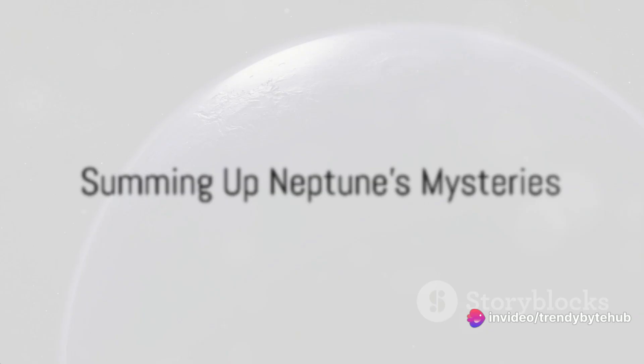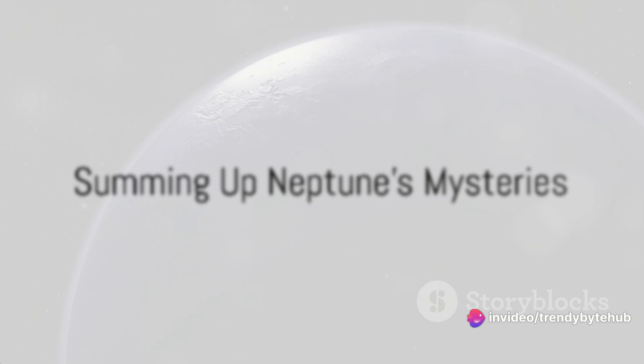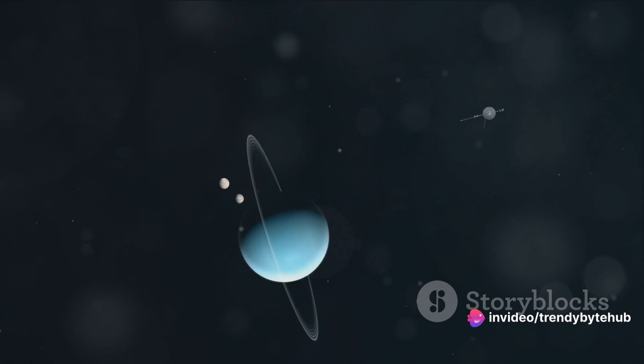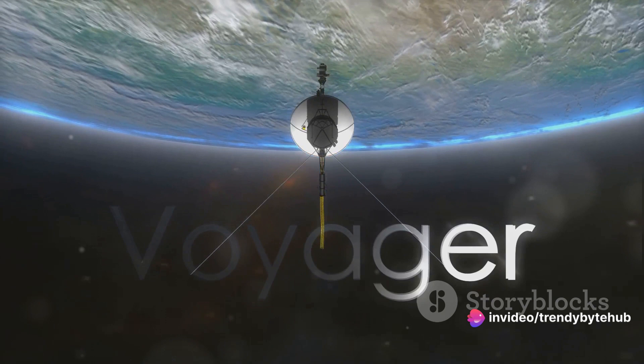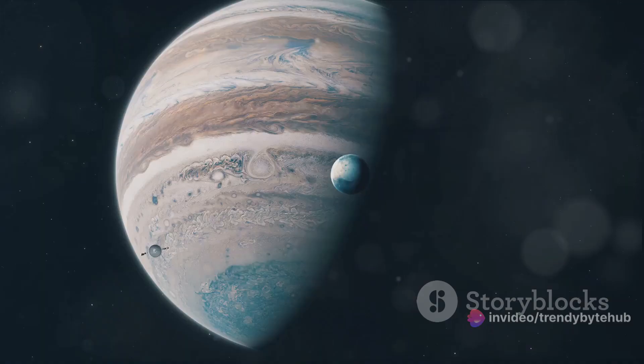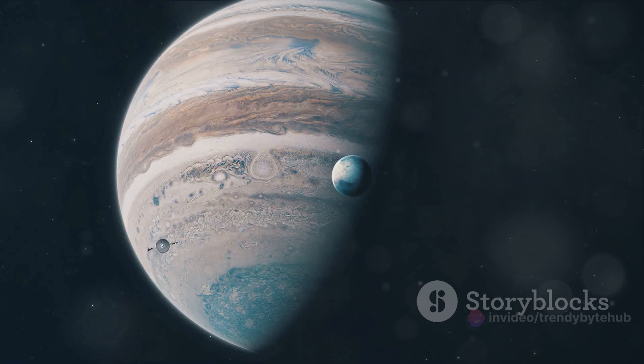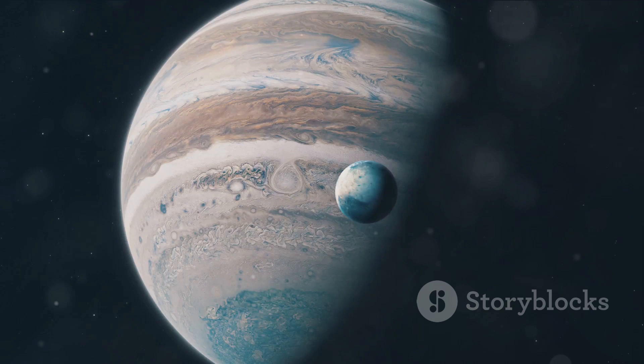So, what have we learned about the mysterious world of Neptune? Well, we've delved into the heart of the blue giant, unraveling its enigmatic nature. We've journeyed back in time to its discovery, a testament to the power of human observation and mathematical precision. This eighth and outermost planet in our solar system was not found by a telescope, but by the sharp minds who noticed the irregularities in Uranus's orbit and predicted Neptune's existence.